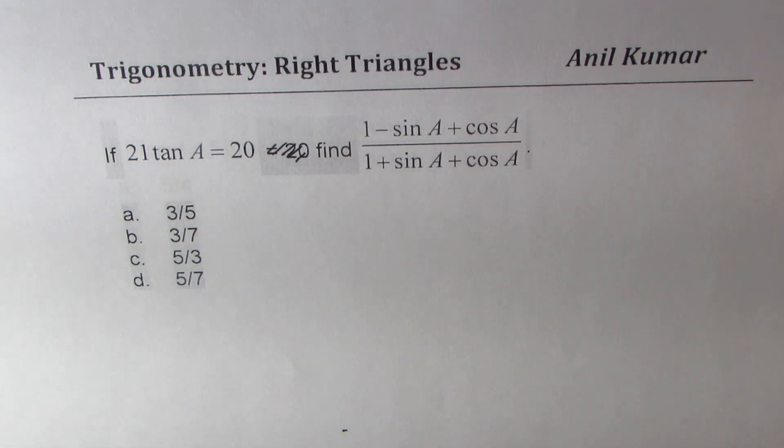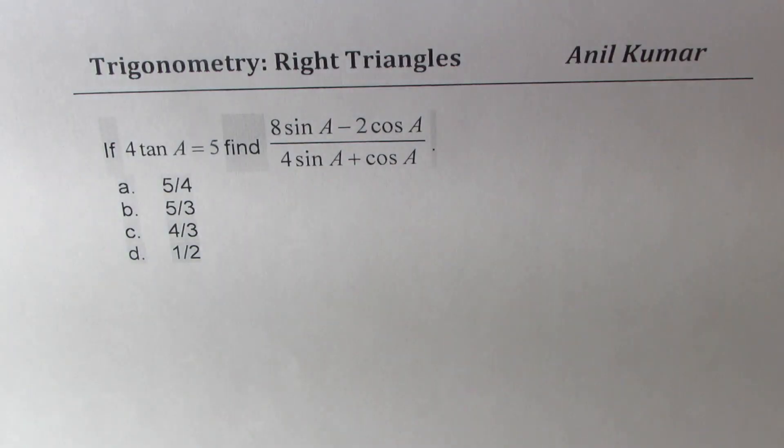Another related question which is very similar is if 4 tan A equals 5, find (8 sin A - 2 cos A) divided by (4 sin A + cos A). Four choices are given to you.